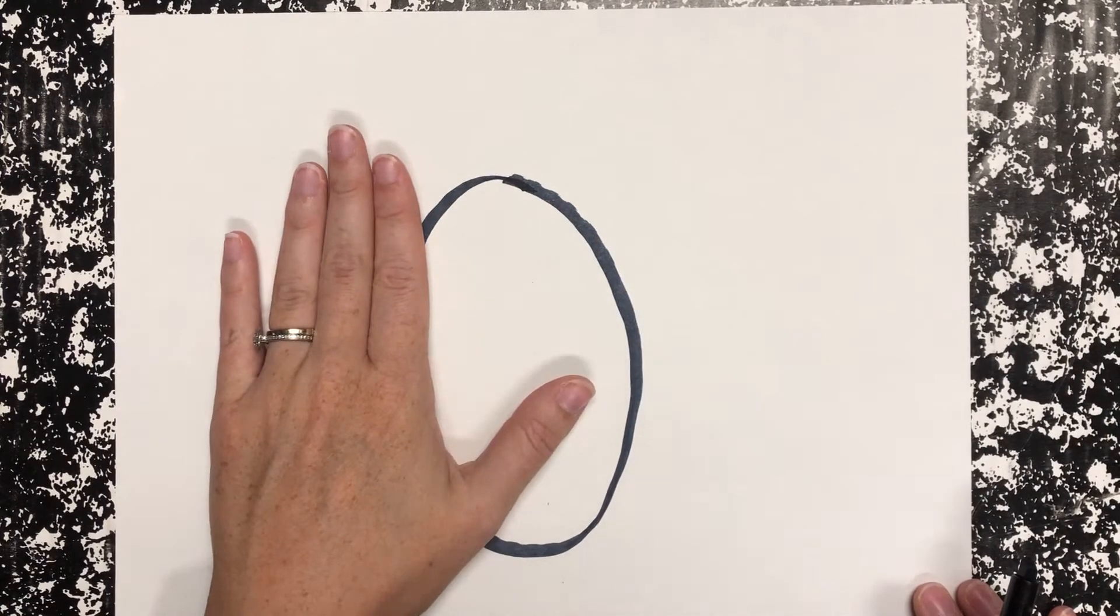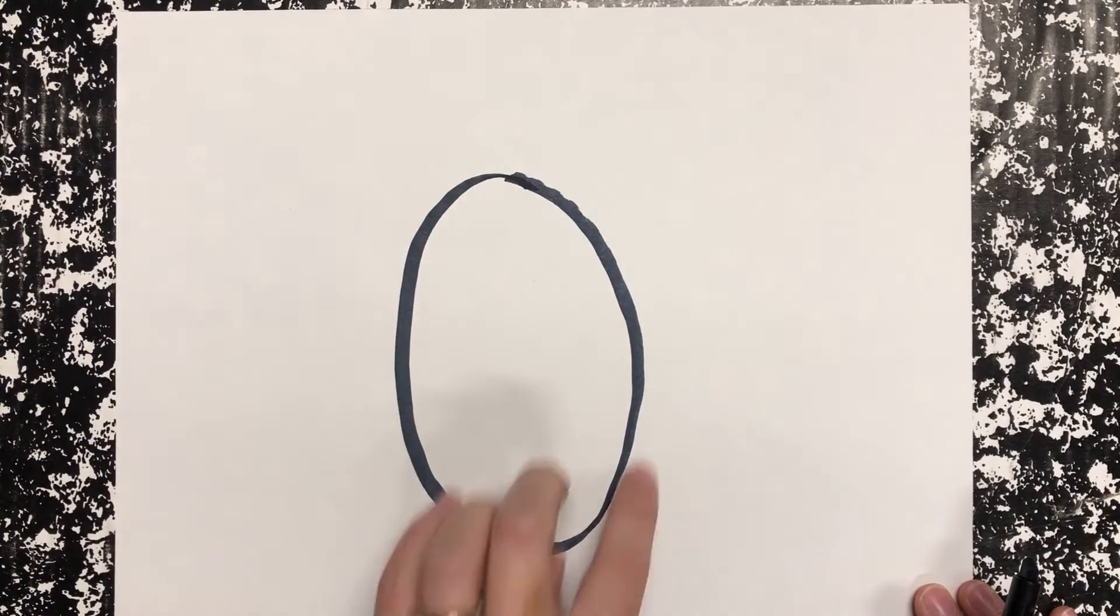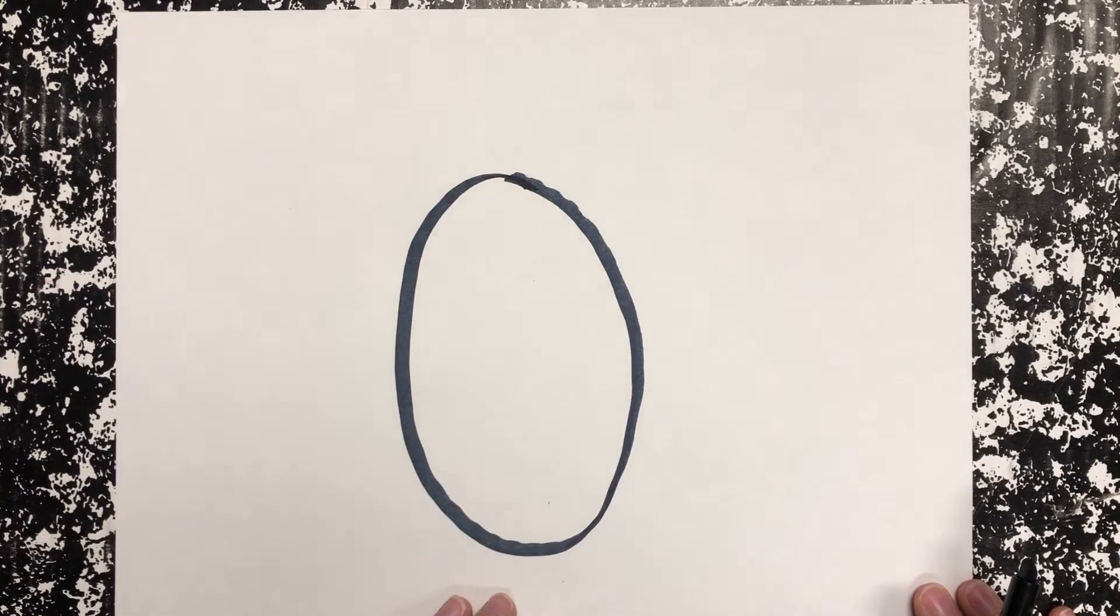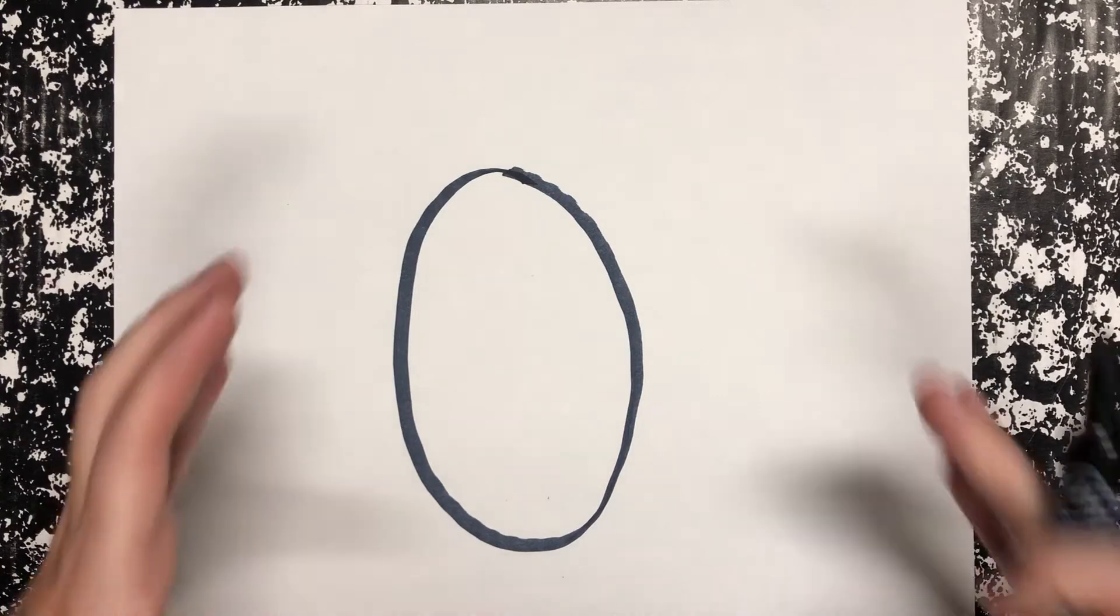My hand might be a little bit bigger than yours. Your hand should be able to fit inside of your oval. The next step, we're going to hug our oval on both sides.